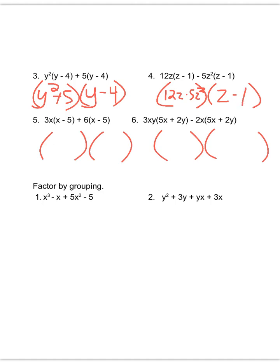Problem 5, 3x plus 6 being multiplied to x minus 5. Problem 6, 3xy minus 2x being multiplied to 5x plus 2y.